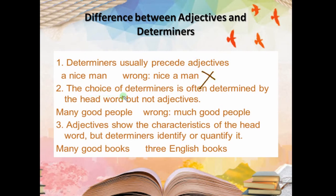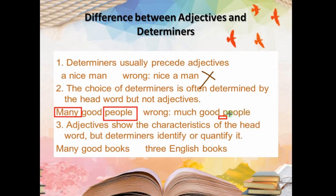The choice of determiner is often determined by the head word, not by adjectives. For example: 'many good people' — the head word is 'people.' We put 'many' according to 'people,' not according to 'good.' If 'good' alone were the focus, you might use 'much,' but because the head word is 'people' (countable plural), we must use 'many.' So 'much good people' is completely wrong. Whatever the noun (head word) is, according to that you have to put your determiner.